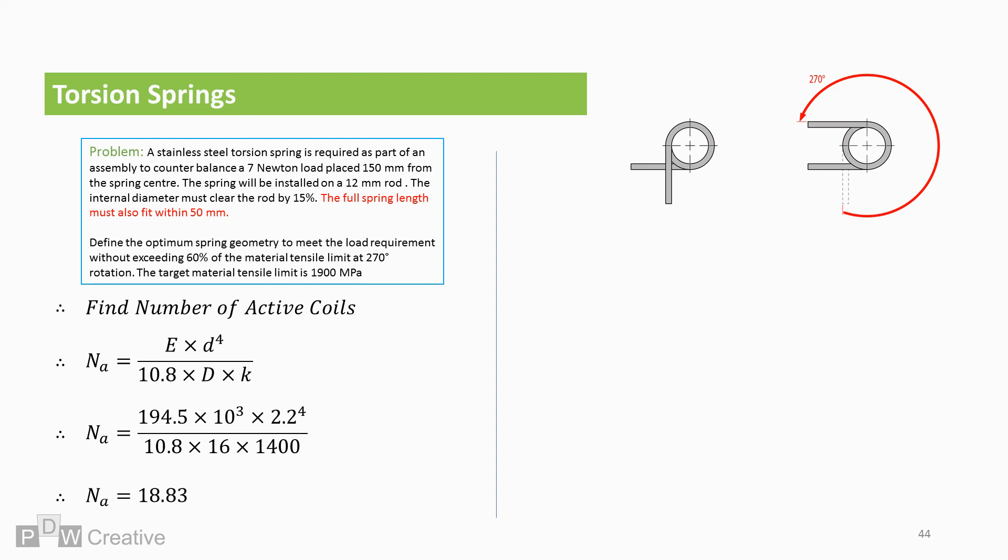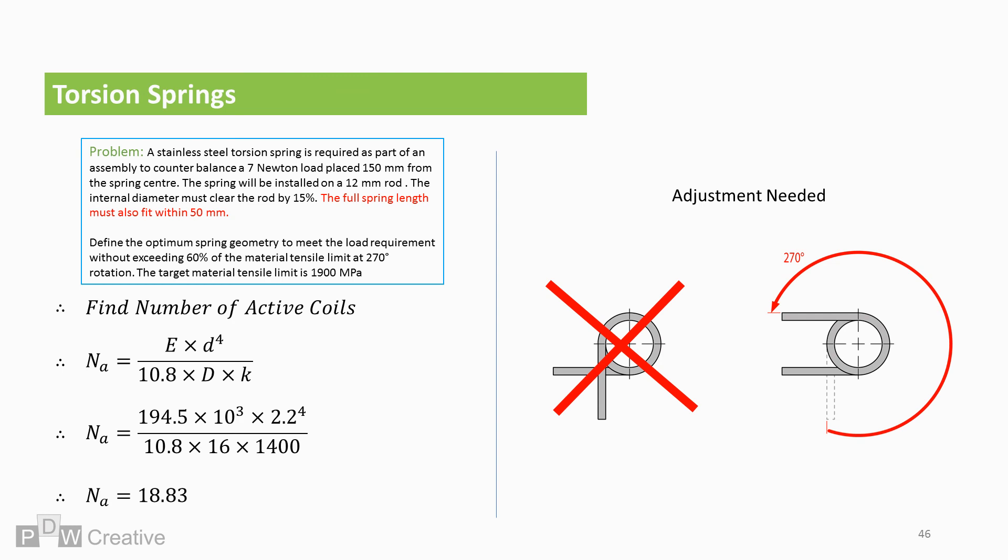Plugging in the missing data, we can say the number of active coils is 18.83. I just need to point out here, in this equation, K is based on the spring stiffness for one complete coil rotation of 360 degrees. And we need to note, the number of coils does not conform to the image we have in mind. So, we can dismiss what we have so far and replace it.